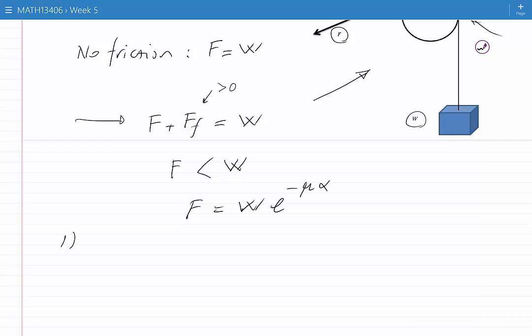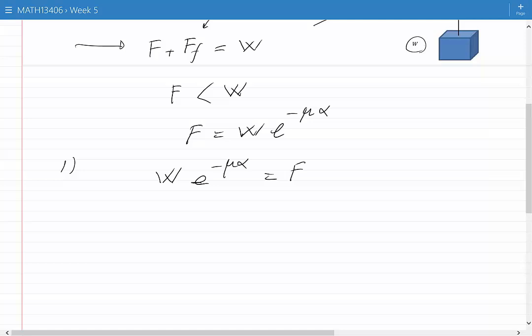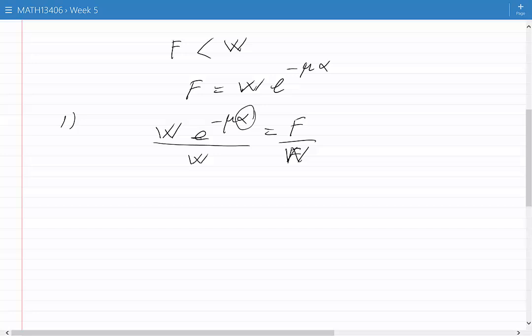We can write the equation as W e to the power of minus mu alpha is equal to F. To isolate alpha, I can first move W to the other side of the equation. If I divide both sides by W, I would have e to the power of minus mu alpha is equal to F over W.